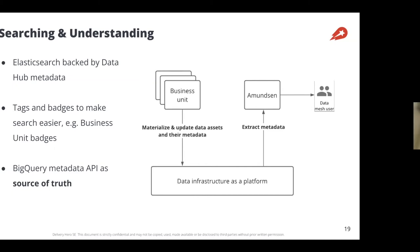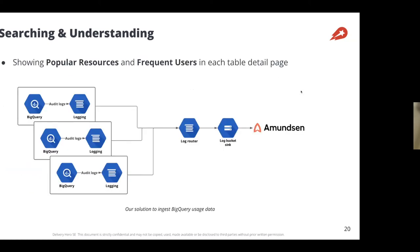We also have custom solutions for showing popular resources. To surface frequent users of each table, we extract BigQuery logs. Each business unit has its own GCP project, and using a log router we extract those logs into a log bucket in our project, then use an Amundsen extractor to ingest this usage data. This lets us show which tables are most frequently queried and who the frequent users of any table are — one of the biggest features we've integrated into our catalog.